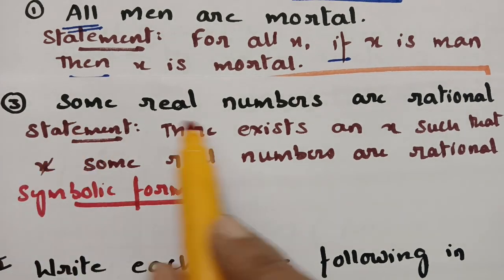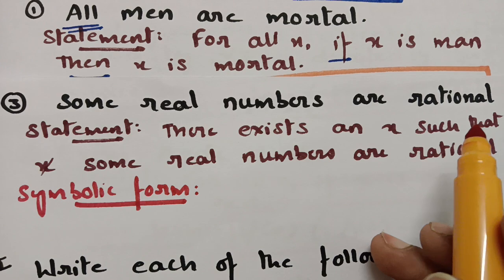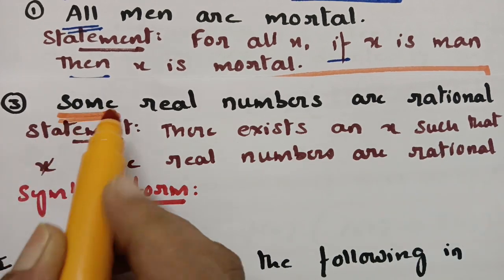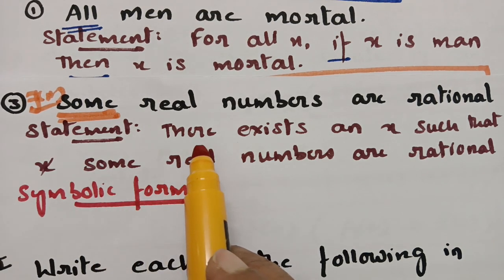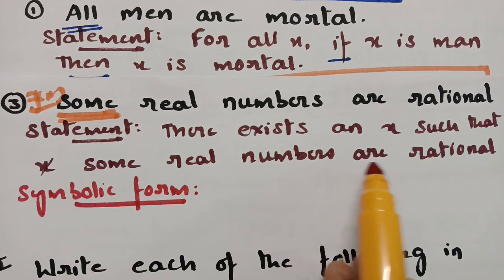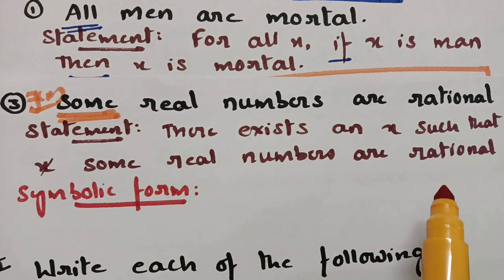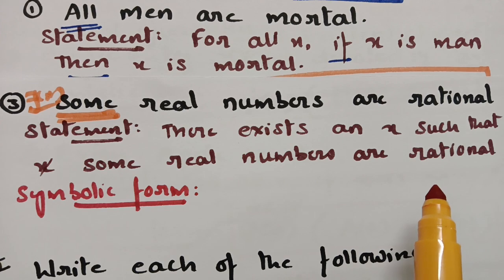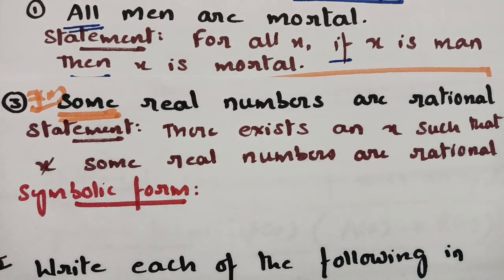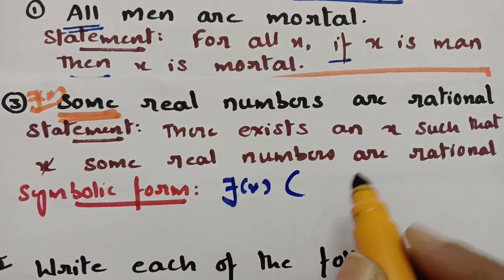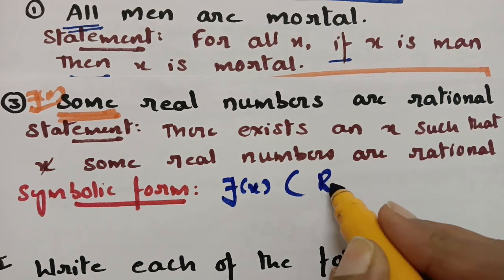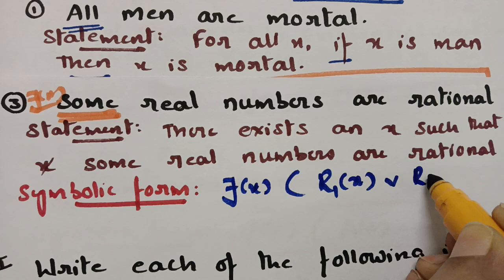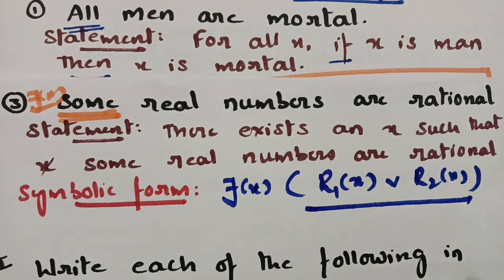The third existential example is 'Some real numbers are rational.' Seeing 'some' confirms this is an existential quantifier. The statement is: there exists an x such that some real numbers are rational numbers. Symbolically: ∃x, R₁(x) ∧ R₂(x), where R₁ denotes real number and R₂ denotes rational number.